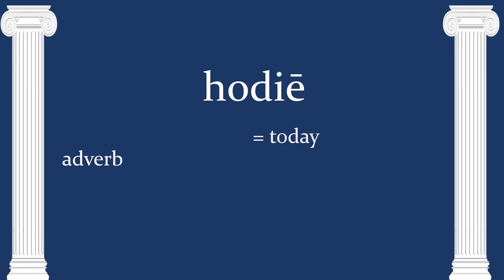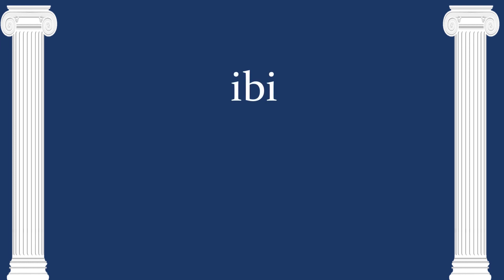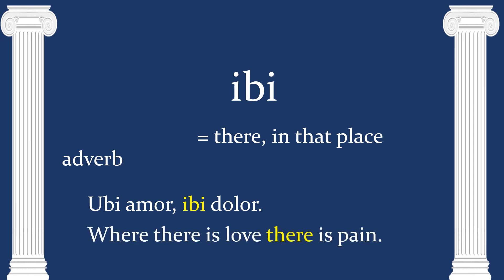This one we've seen before: hodie, an adverb which means today. You probably recognize this in the phrase hodie mihi, cras tibi — today it is me, tomorrow it will be you. Here's another one we've seen before: ibi, which means that, there, or in that place — like amor ibi, dolor ibi: where there is love, there is pain.